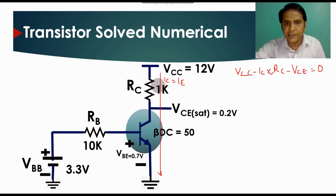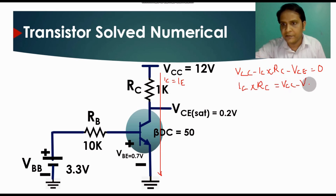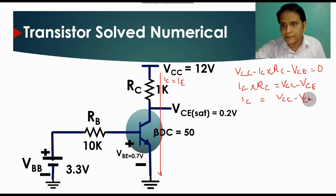Rearranging the KVL equation: VCC minus IC×RC minus VCE equals zero. Our objective is to find the saturated collector current, so we get IC×RC equals VCC minus VCE, which gives IC(sat) equals VCC minus VCE, divided by RC.